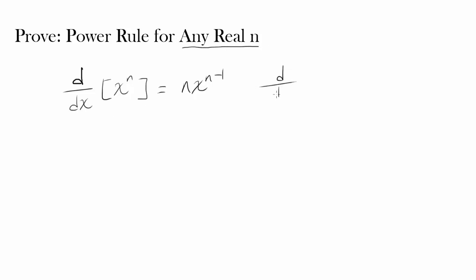Once we are done, we can prove the derivative of x to the π is going to be, since π is real, you can still apply the formula, π times x to the π minus 1. How we are going to prove it is by using logarithmic differentiation.